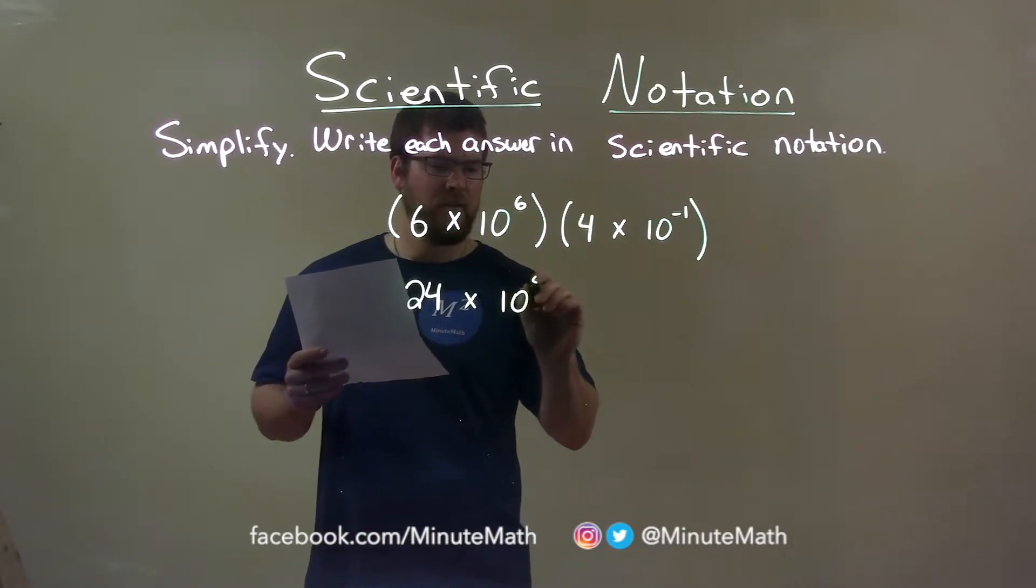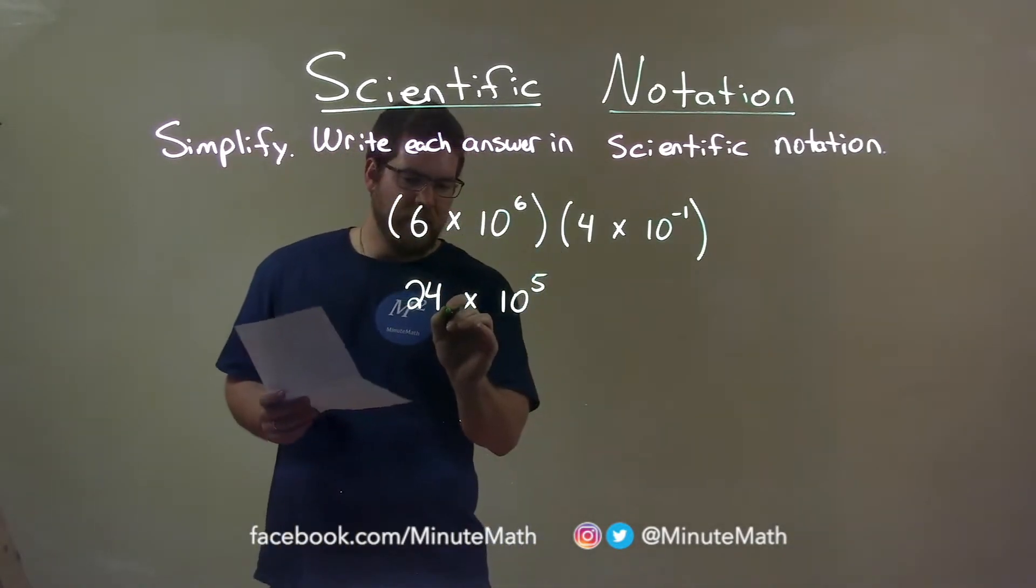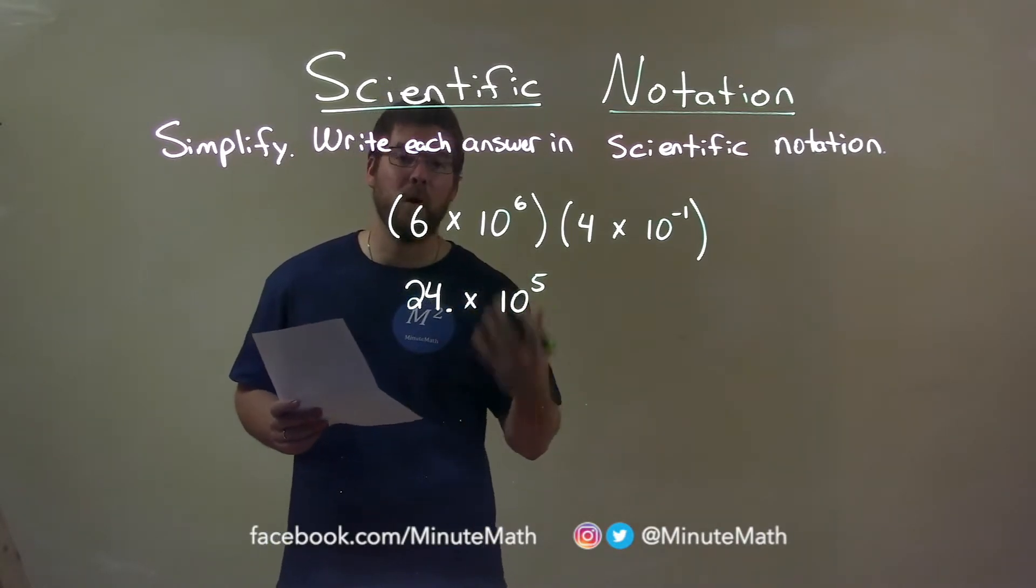10 to the fifth power. Now, we're not done. Do not stop here. We have a decimal after the 24.